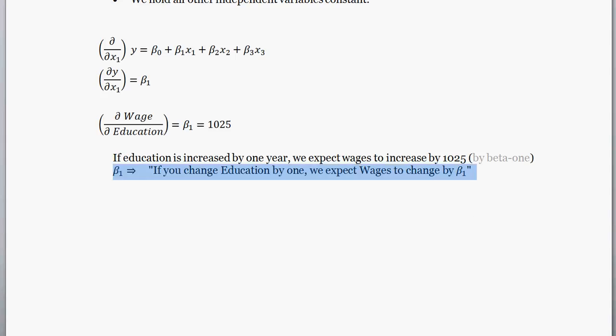So beta 1 here, if you change education by one, we expect wages to change by beta 1. So if we increase education by one, wages will increase by 1,025. Hopefully that's helpful. If you did find it helpful, be sure to give it a thumbs up. Be sure to put links in the description to more econometrics resources. Thanks, bye.